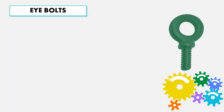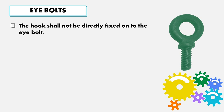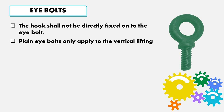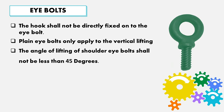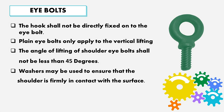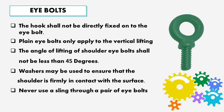Eye bolts: the hook shall not be directly fixed onto the eye bolt. Plain eye bolts only apply to vertical lifting. The angle of lifting for shoulder eye bolts shall not be less than 45 degrees. Washers may be used to ensure the shoulder is firmly in contact with the surface. Never use a sling through a pair of eye bolts.